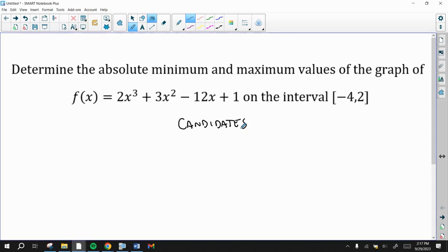So first we're going to find the critical numbers. The critical numbers are where the derivative, 6x squared plus 6x minus 12, equals 0.